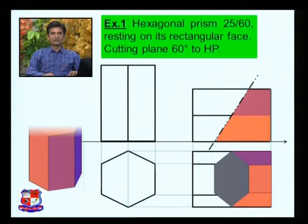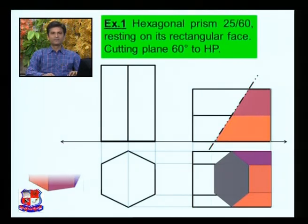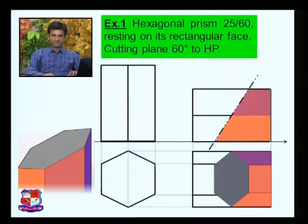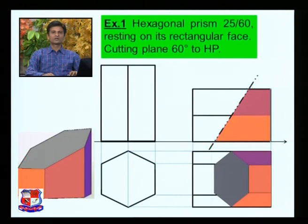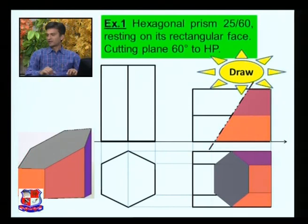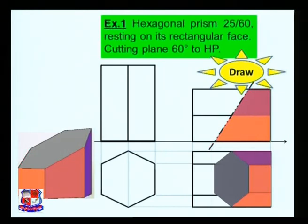If we cut this solid, it will appear like this. This irregular hexagonal shape would be the true shape of the section and it can be drawn as shown. We will now draw the true shape of this section. Up to this step, we had drawn previously.